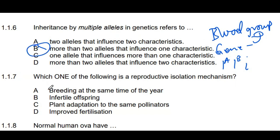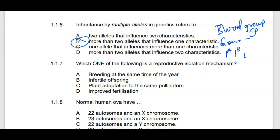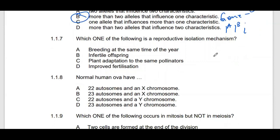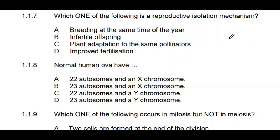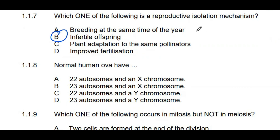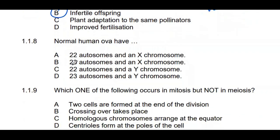Reproductive isolation means organisms are being isolated as a result of their reproductive strategy or mechanism. Breeding at the same time of the year can't cause isolation. Infertile offspring — this is correct. Plant adaptation to the same pollinating agent can't cause isolation. Improved fertilization increases fertility. So the answer is B. For example, a horse and a donkey produce a mule which cannot reproduce — it is infertile, so they are reproductively separated.